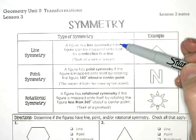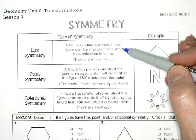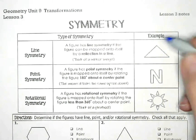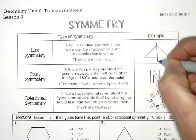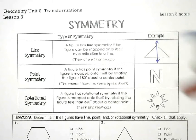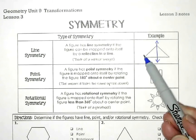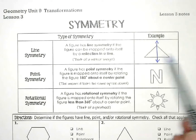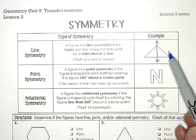By line symmetry, a figure has line symmetry if we can draw a line so the figure can be mapped onto itself — it's kind of like a line of reflection. For example, I can draw a line through this direction right here, and if that was like my fold line, I could fold this over and it would be exactly the same — like mirror images of each other. So this would be line symmetry.